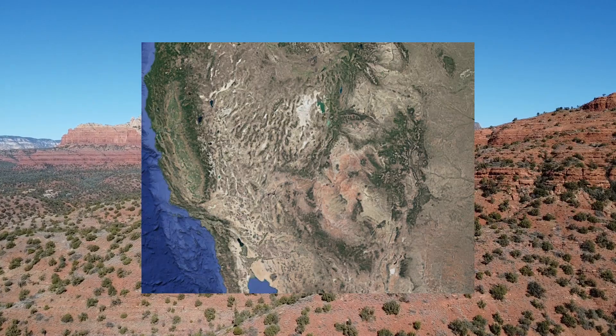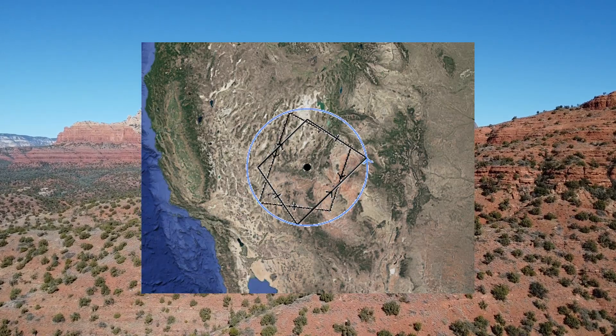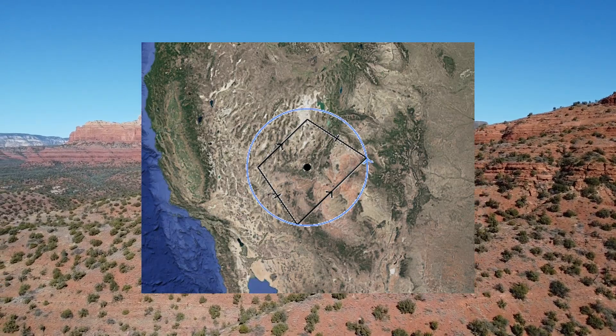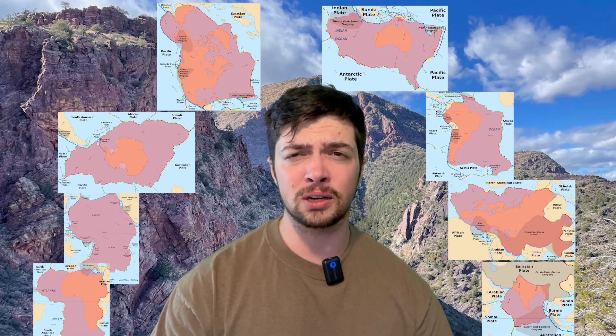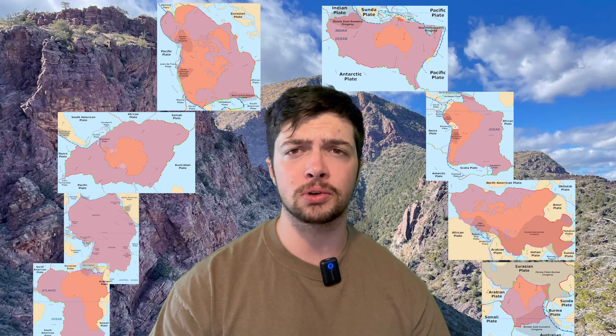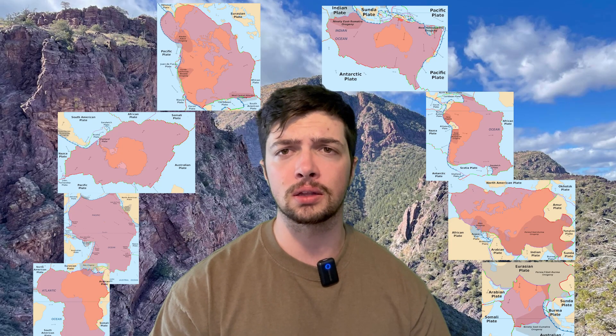The first theory is based on rotation. To cover this we need to back up. Earth's crust is broken up into plates — essentially massive areas of the crust that move separately from one another.